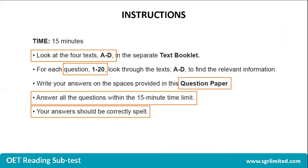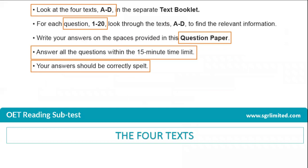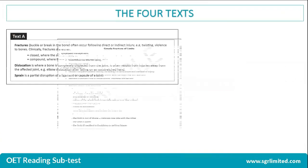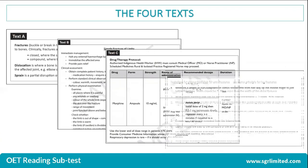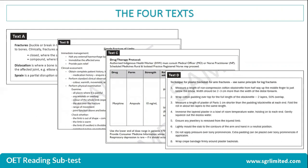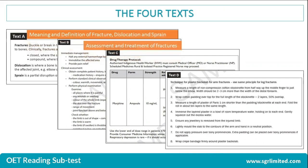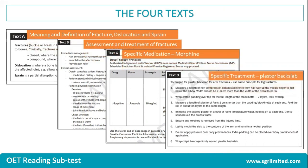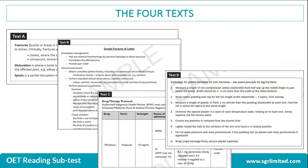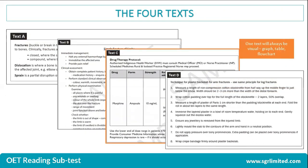Always remember that your answers should have correct spelling. The four texts — texts A, B, C, and D — will need to be read very quickly, and you'll need to understand what topics are given within each text. Always remember that one text contains a visual. This could be a graph, a table, or a flowchart.